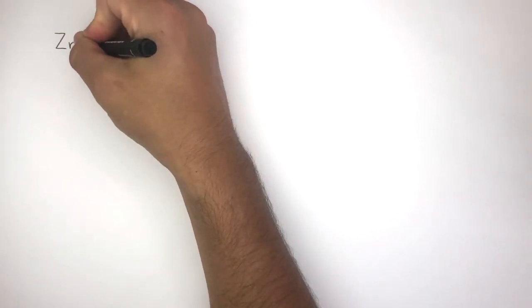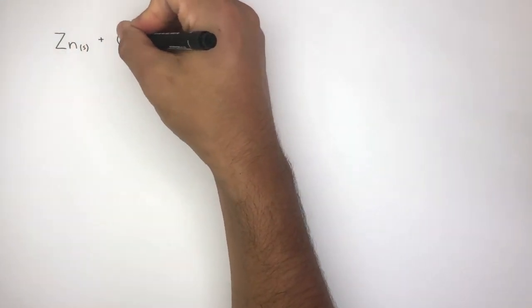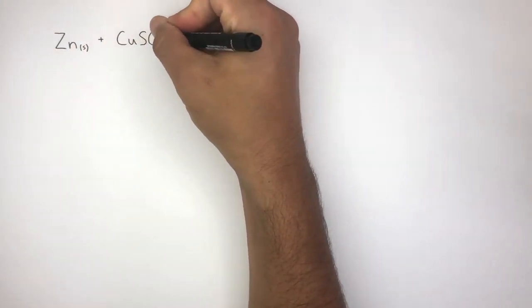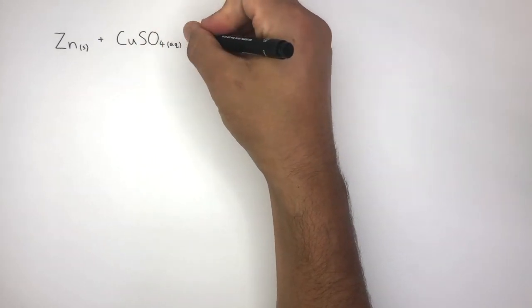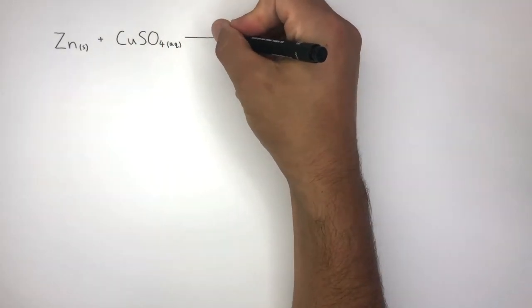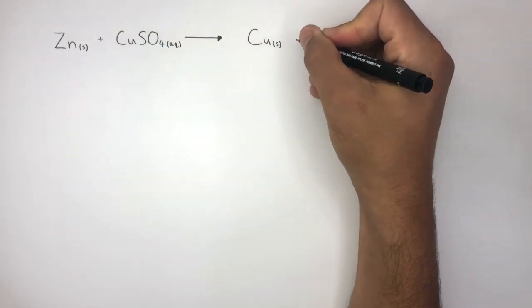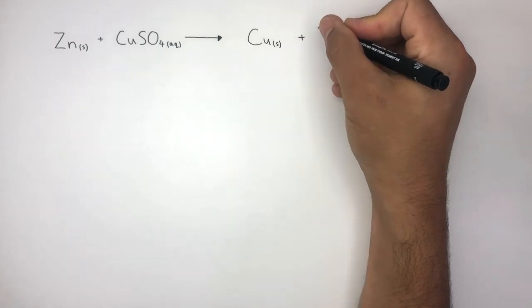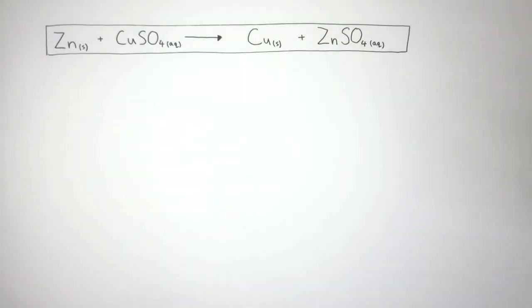The balanced symbol equation for this chemical reaction is: Zn(s) reacts with CuSO₄(aq) to form Cu(s) and ZnSO₄(aq).